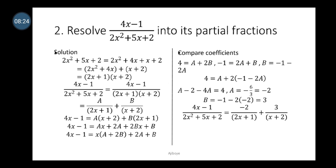Comparing coefficients: the coefficient of x on the left-hand side is 4, so a plus 2b equals 4. The constant on the left-hand side is minus 1, so 2a plus b equals minus 1. These are two linear equations with two variables to solve simultaneously.